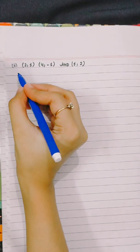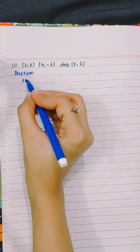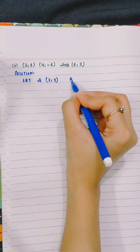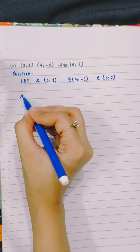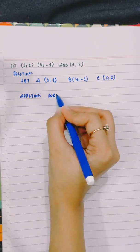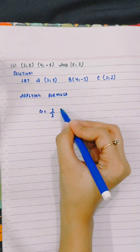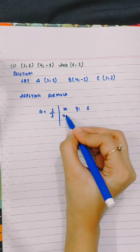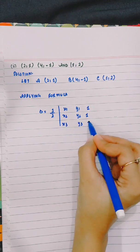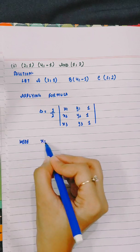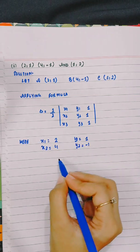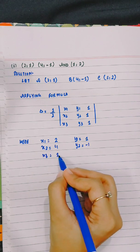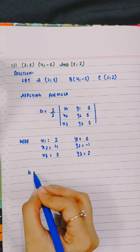Now part 2 is (2,1), (4,-1), and (1,2). Let A be (2,1), B be (4,-1), C be (1,2). Applying formula, area equals half of x1, y1, 1, x2, y2, 1, x3, y3, 1. Here x1 is 2, y1 is 1, x2 is 4, y2 is -1, x3 is 1, and y3 is 2.